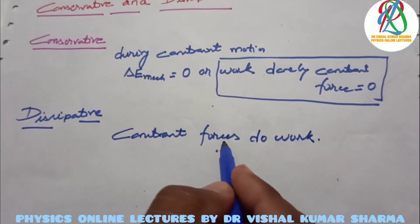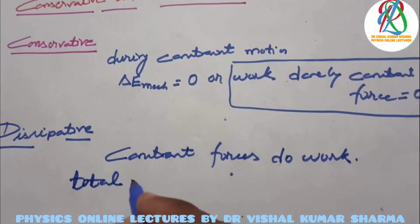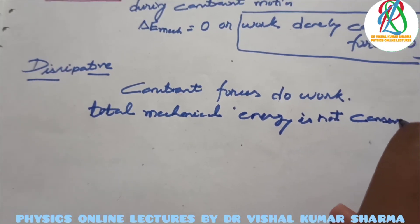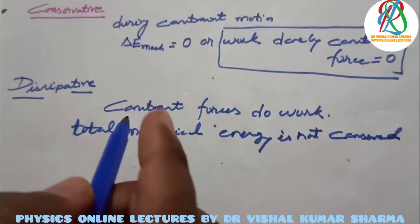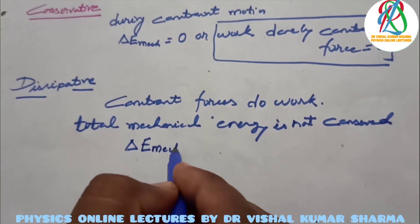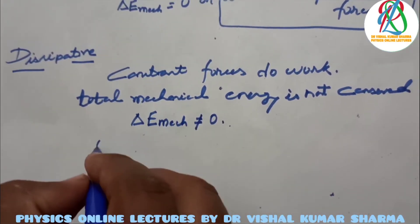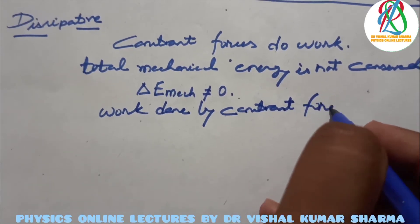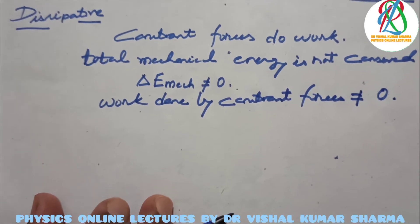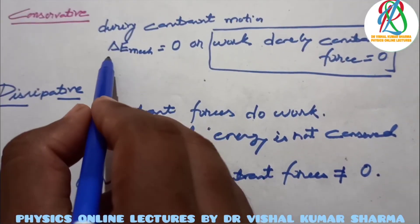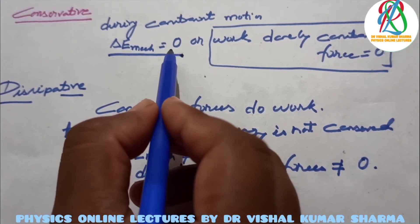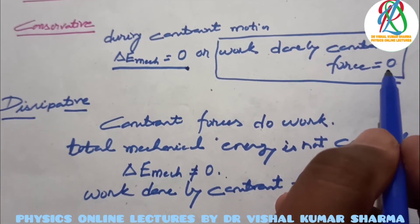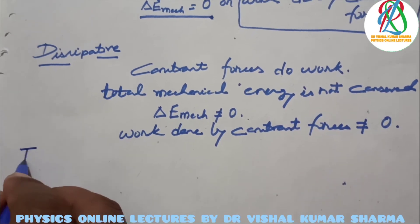Because constraint forces are doing work in the dissipative case, the total mechanical energy is not conserved. Therefore, delta E mechanical is not equal to zero, and the work done by constraint forces is not equal to zero. In contrast, for conservative constraints during constrained motion, the total mechanical energy is conserved and work done by constraint forces equals zero.